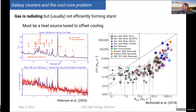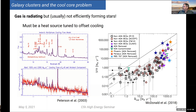That doesn't mean star formation is not occurring — it's just occurring in a very suppressed way. If you plot the star formation rate against the mass dropout rate from the intracluster medium, you find it corresponds to a star formation rate of maybe 1% of the expected value, with exceptions like the Phoenix cluster being up in the 50% or so range.